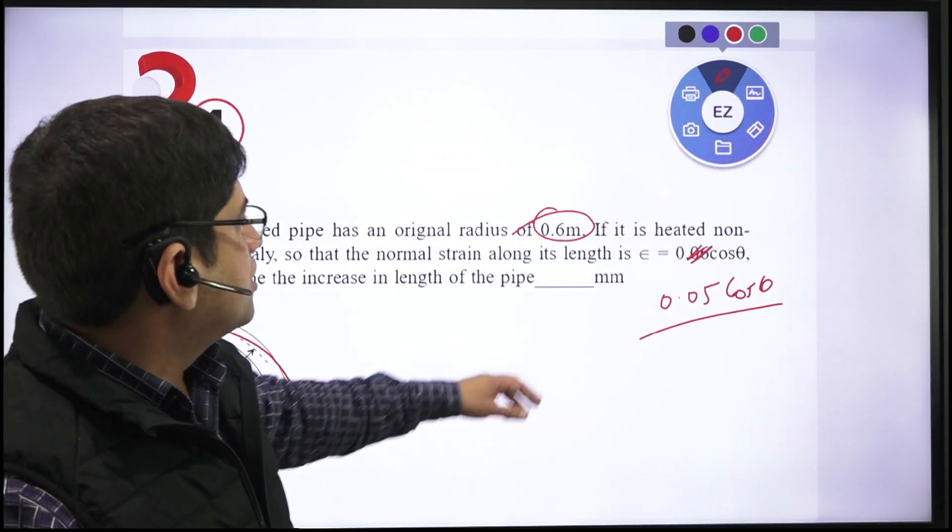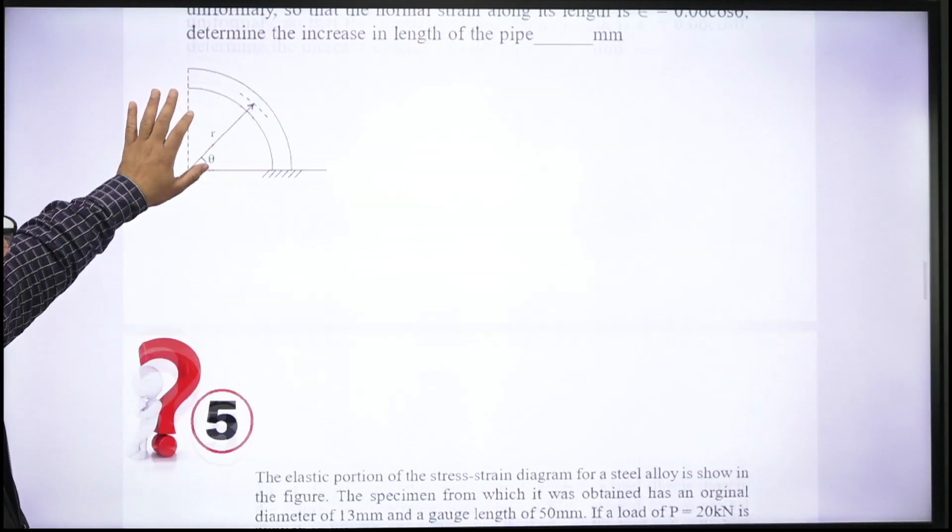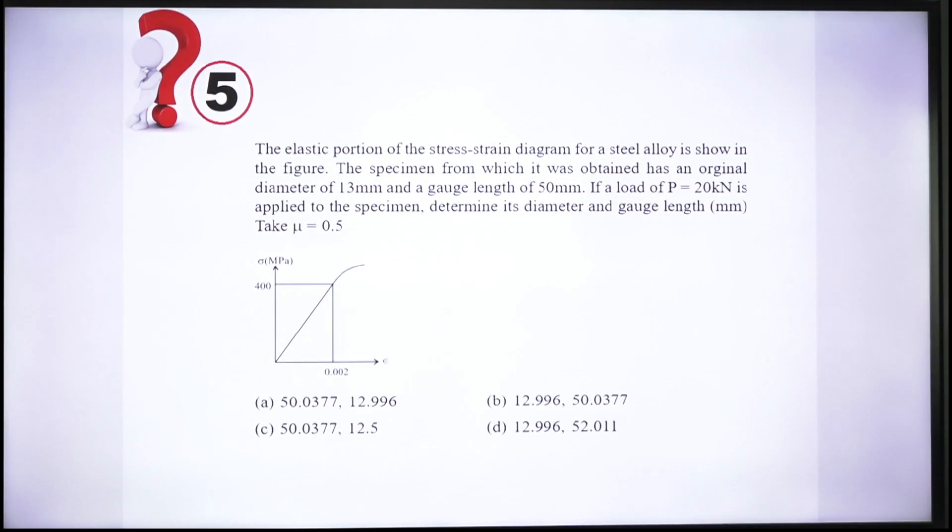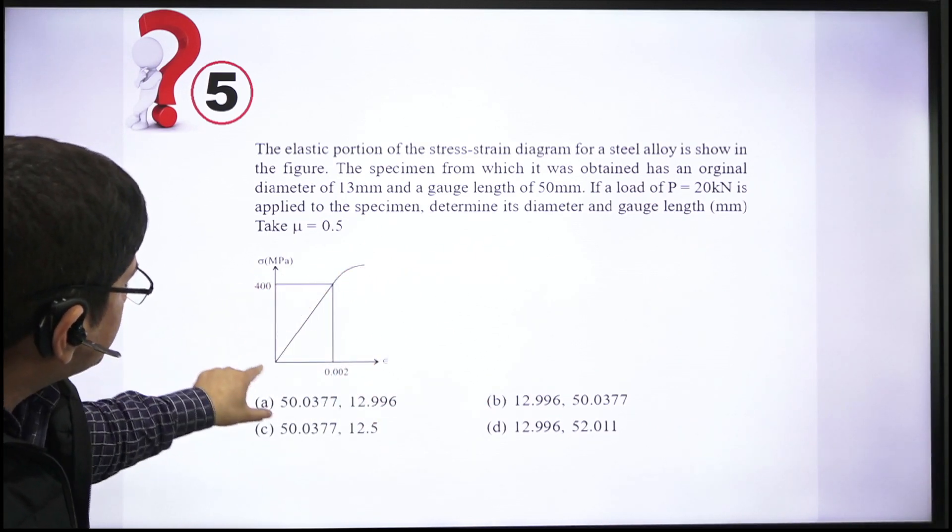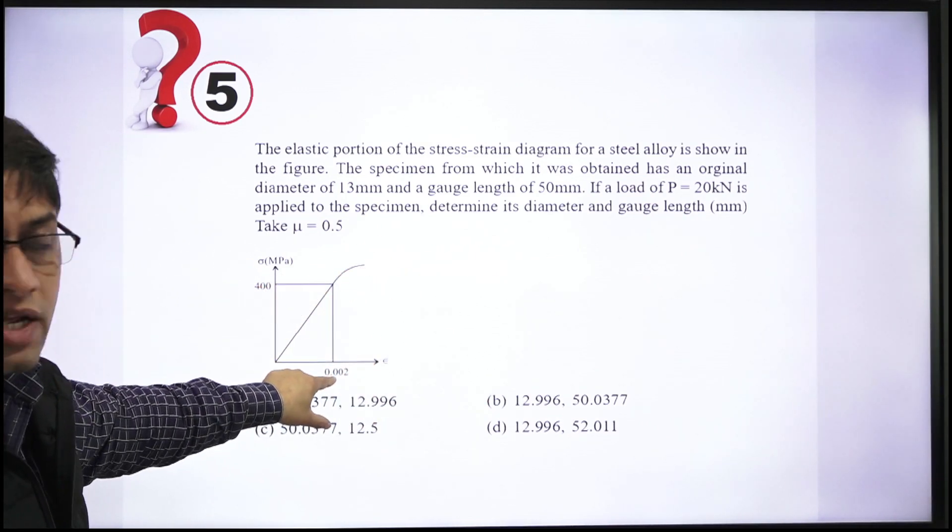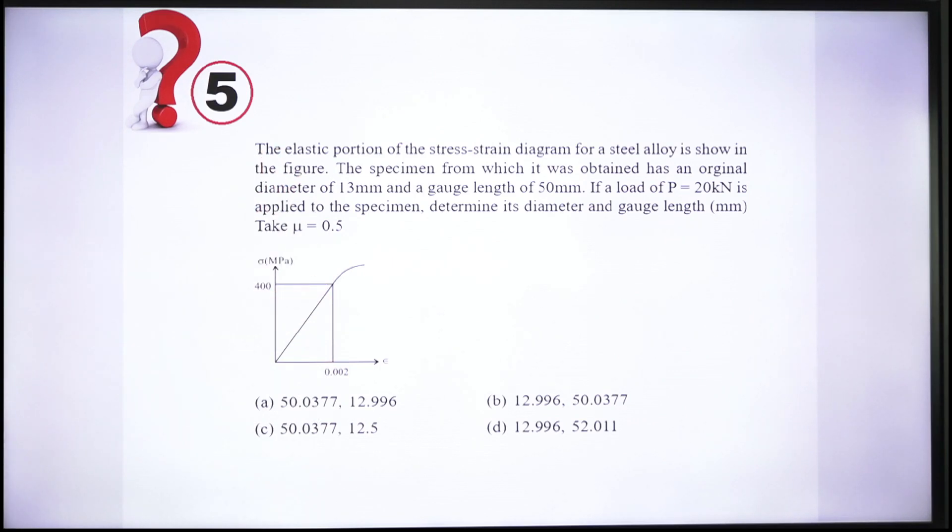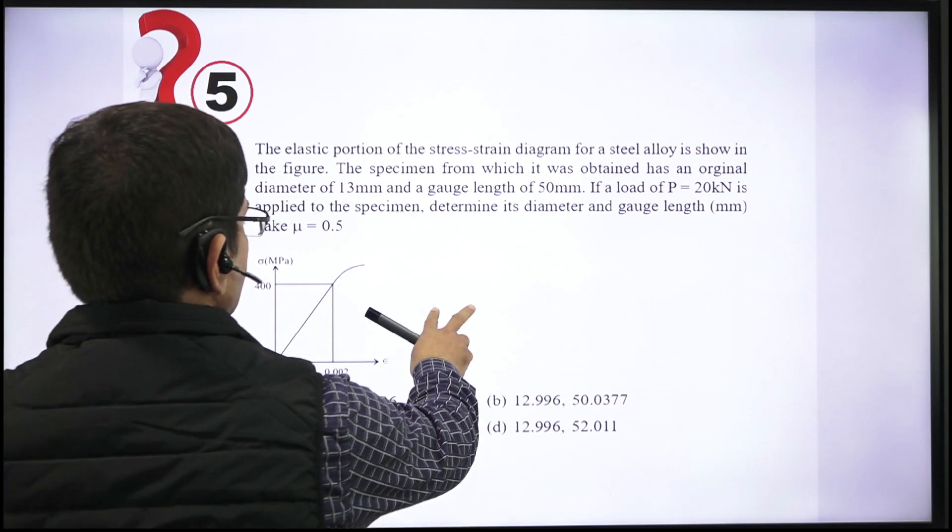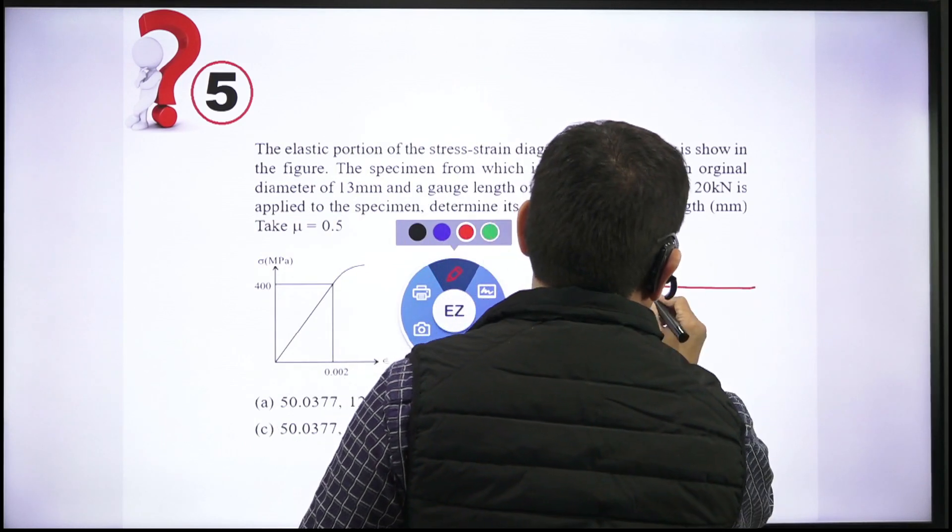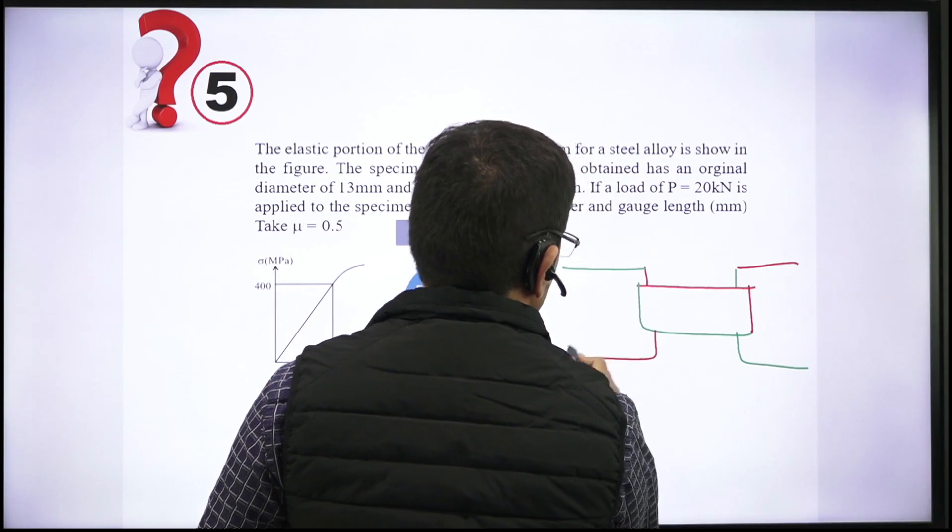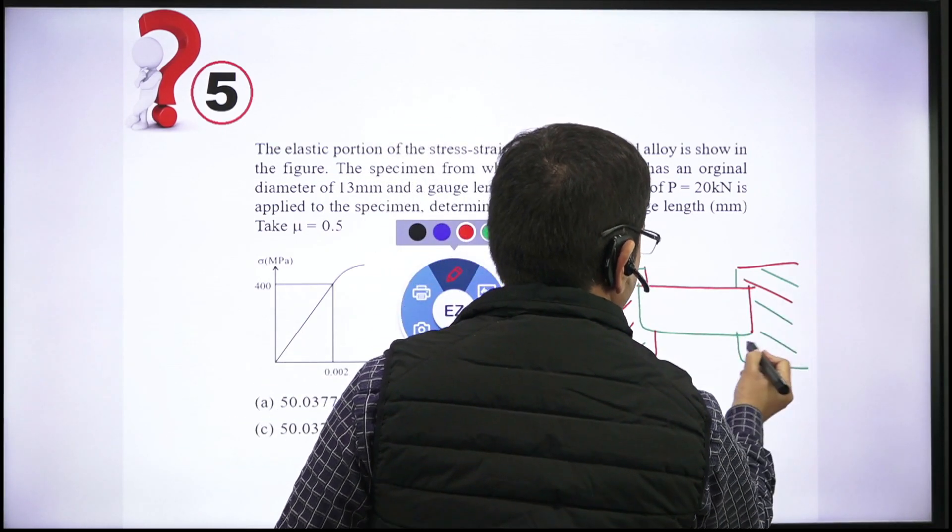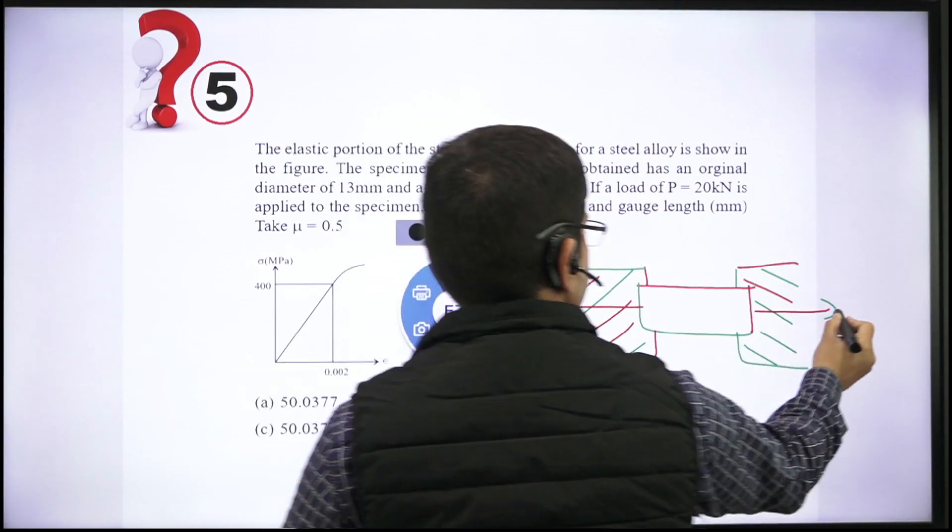Next question: There is elastic limit and plastic limit. Sigma in megapascal and strain is also given. Stress-strain diagram is given up to elastic limit. Stress-strain diagram for steel alloy is given. Original diameter and gauge length—you know what is gauge length? Whatever stress-strain diagram you plot, you make it on a universal testing machine. What is universal testing machine? There is a machine which is basically applying some kind of tensile load P on the bar.